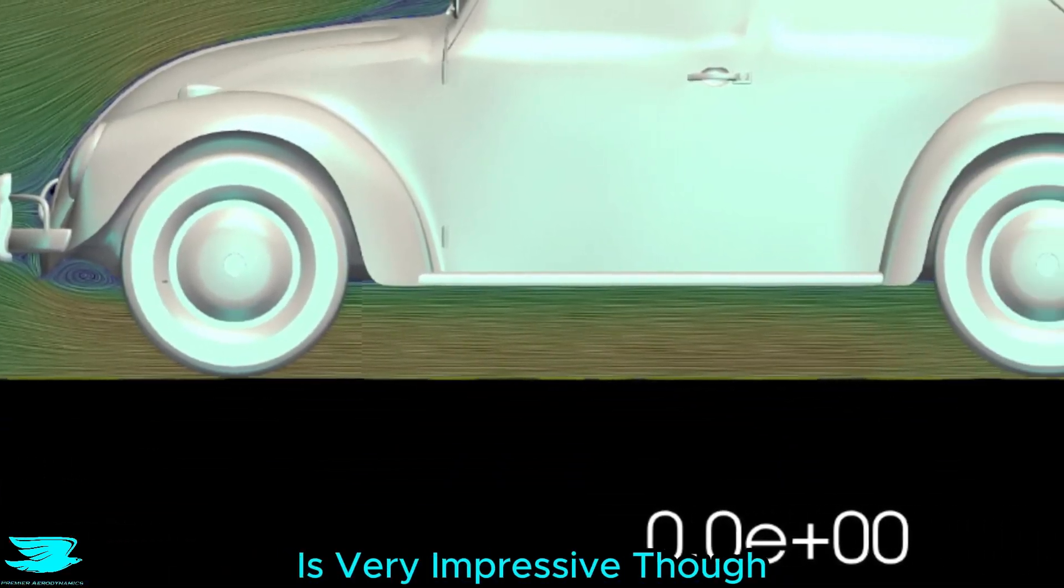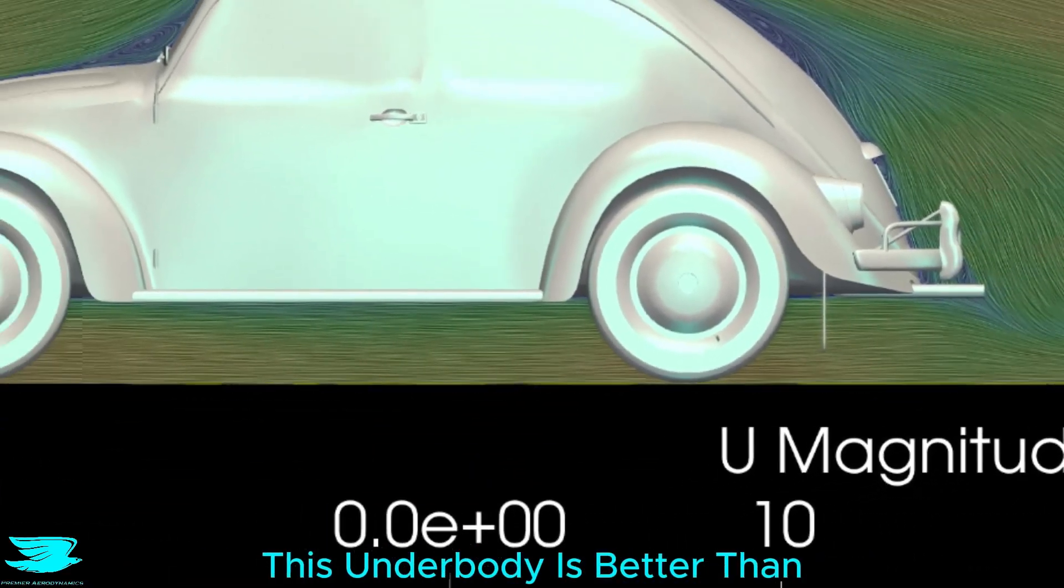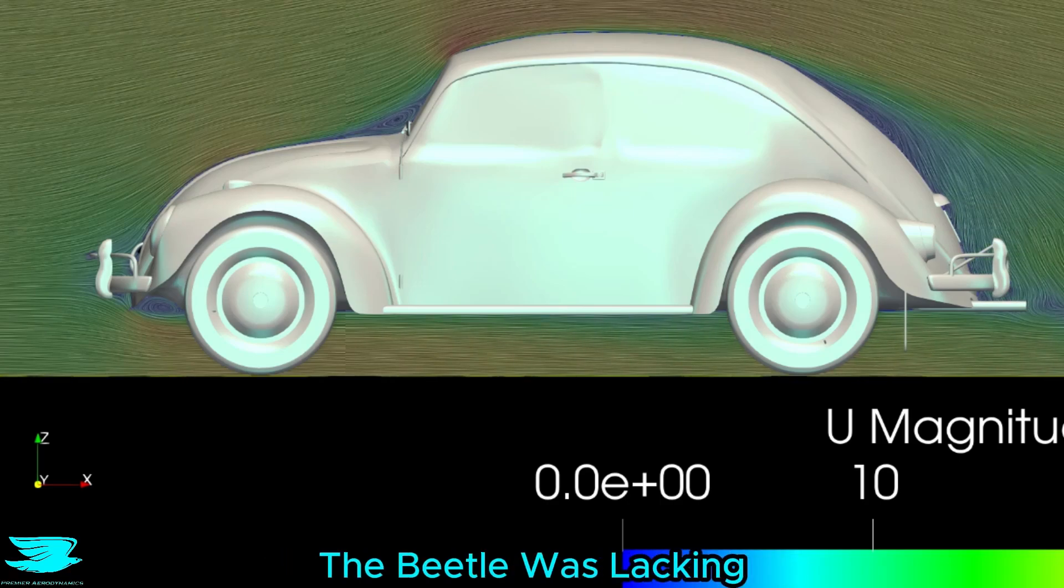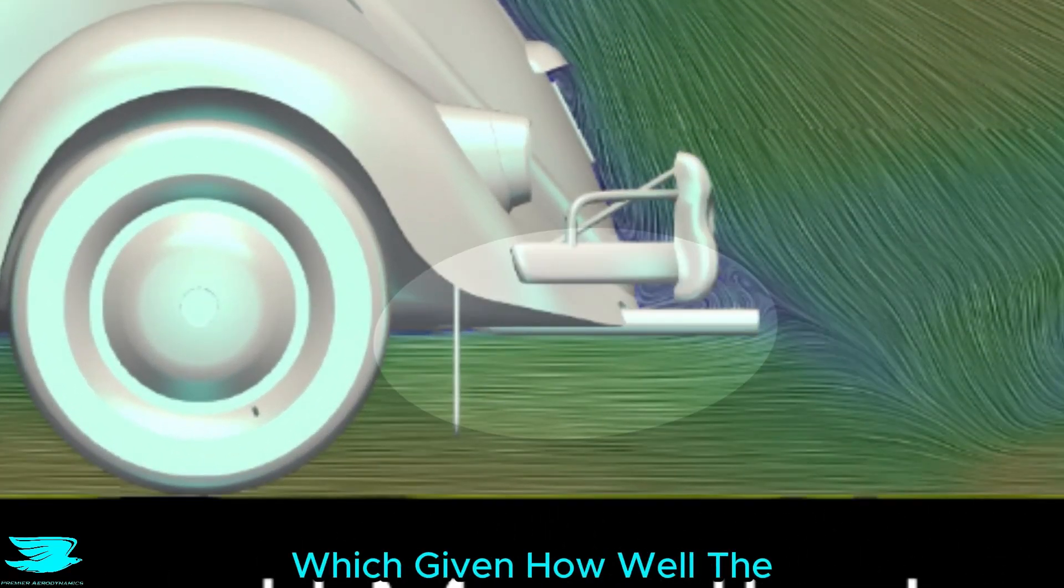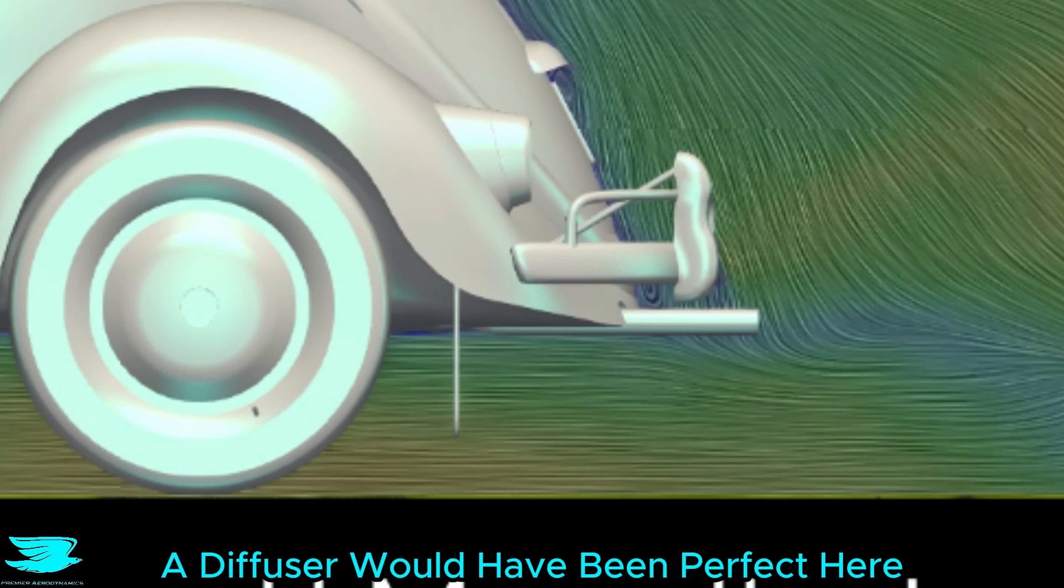The rest of the underbody is very impressive though, with the flow staying nicely attached. This underbody is better than some modern cars, and one major feature that the Beetle is lacking is the diffuser at the back, which given how well the underbody flow is, a diffuser would have been perfect here.